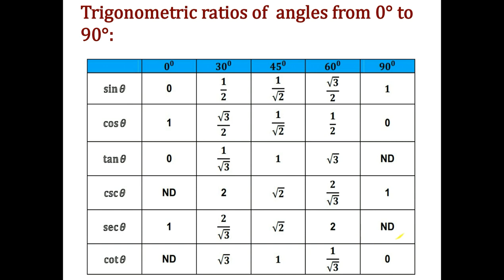For tan theta: tan 0° = 0, tan 30° = 1/√3, tan 45° = 1, tan 60° = √3, and tan 90° is not defined. These are the trigonometric ratio values for the standard angles from 0° to 90°.